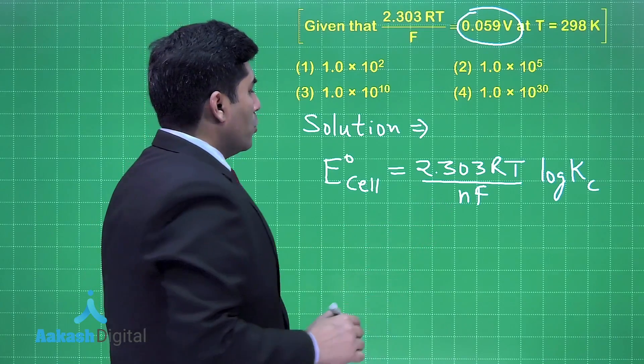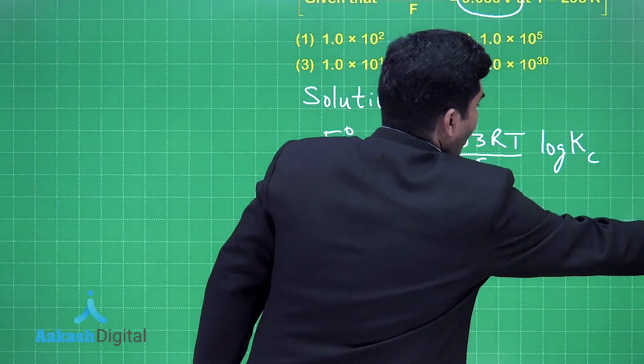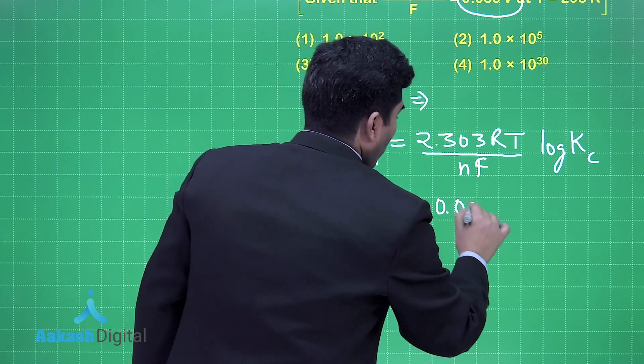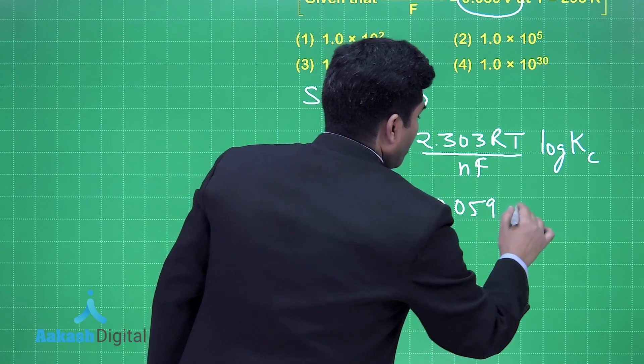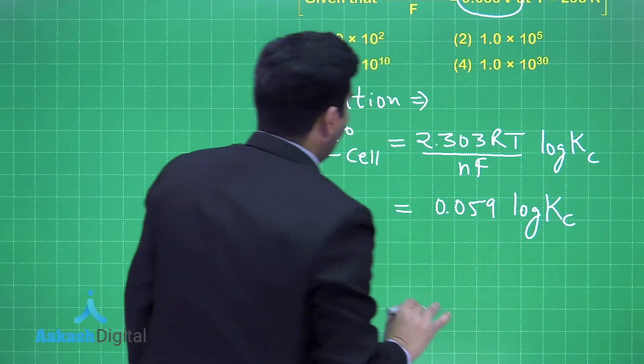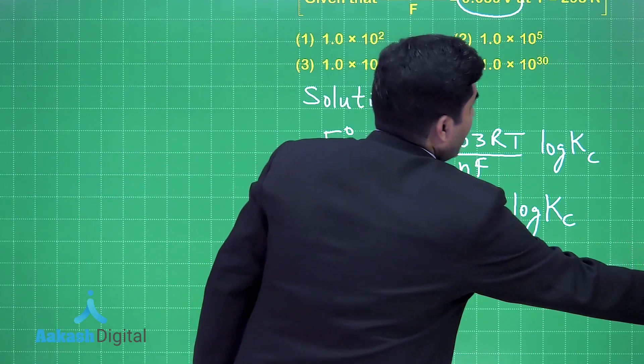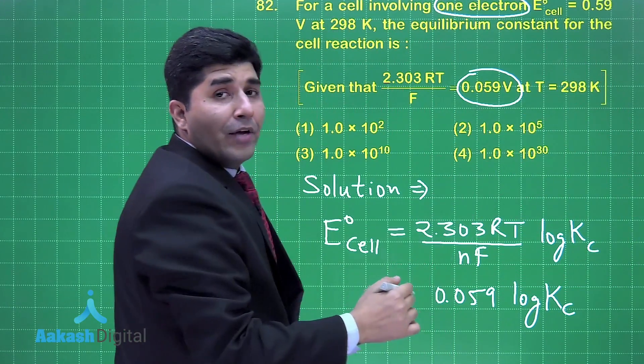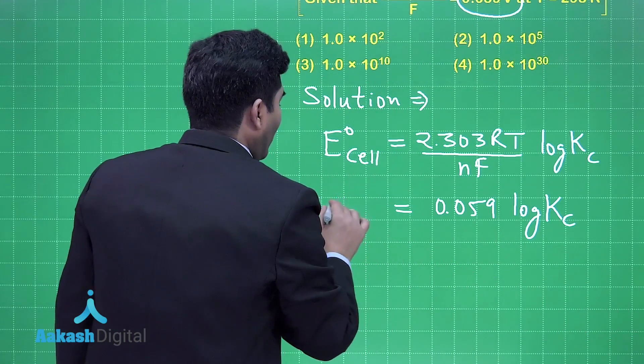So we can write it like 0.059 log Kc. And E°cell is also given to us, E°cell = 0.59, so it is equal to 0.59.